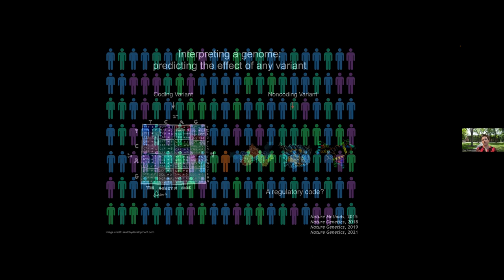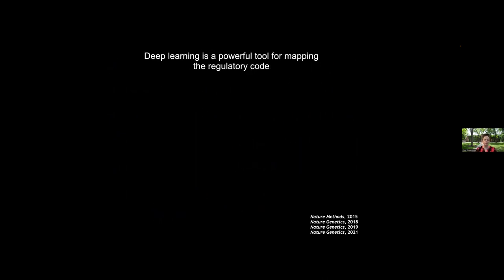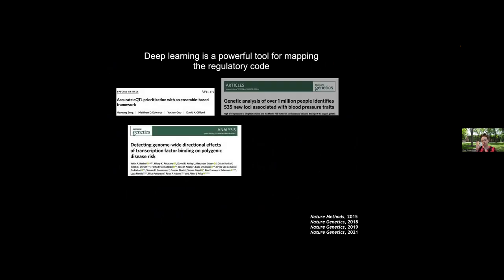The key challenge is that most disease mutations we might rarely observe, and multiple mutations in the non-coding space can lead to similar outcomes. All these individuals might have the same disease but could be caused by different combinations of variants, many of which we might never observe with enough power to really link them to disease. Deep learning turns out to be a powerful tool for mapping this regulatory code.